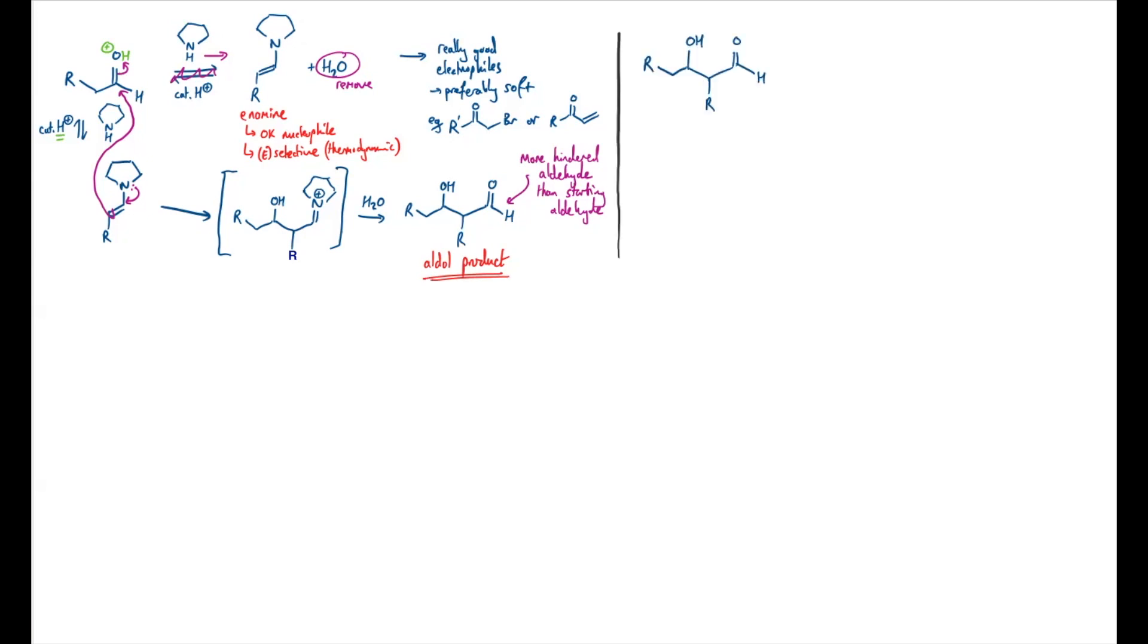So just examining this aldol product to start with, we identify that there are two stereogenic centers here. So it's possible under these reaction conditions to form four stereoisomers. We could form the stereoisomer that has both of the groups coming forwards or we could form its enantiomer where they're both going backwards. So these two here are enantiomers. But this pair of stereoisomers here are one diastereomer and I'm just going to call this the 1,2-syn diastereomer.